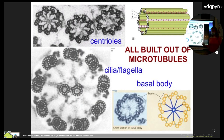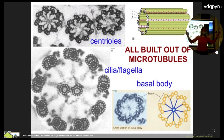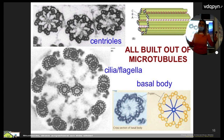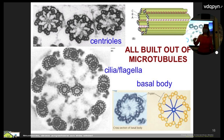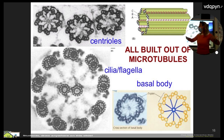Those same microtubules that go across the cell during mitosis help separate the sister chromatids. Homologous pairs separate in Anaphase 1 of Meiosis 1, and sister chromatids separate in Anaphase 2 of Meiosis 2, or during Anaphase of mitosis.